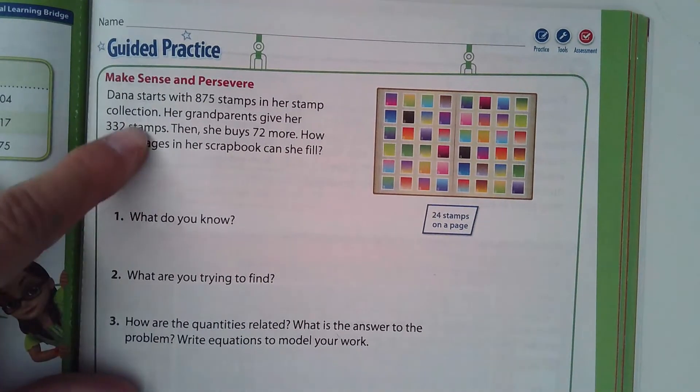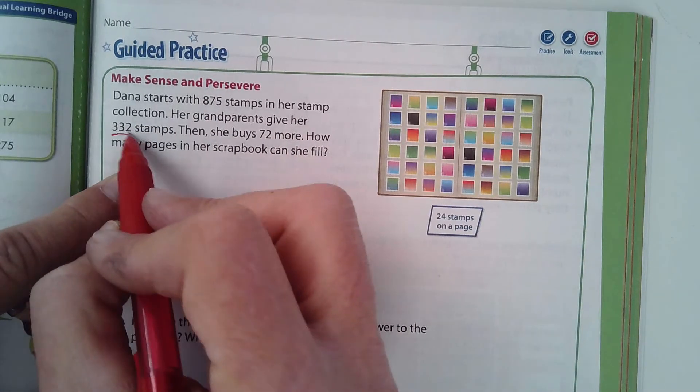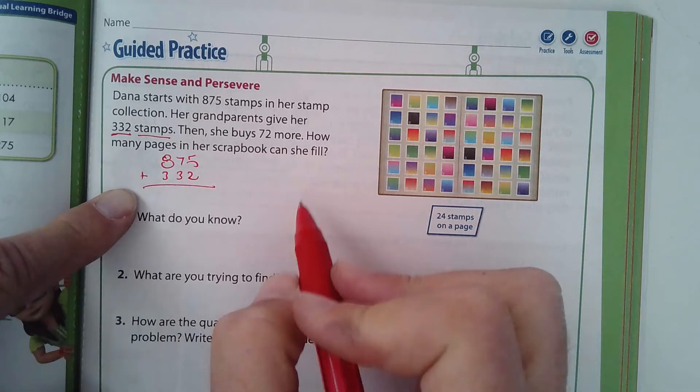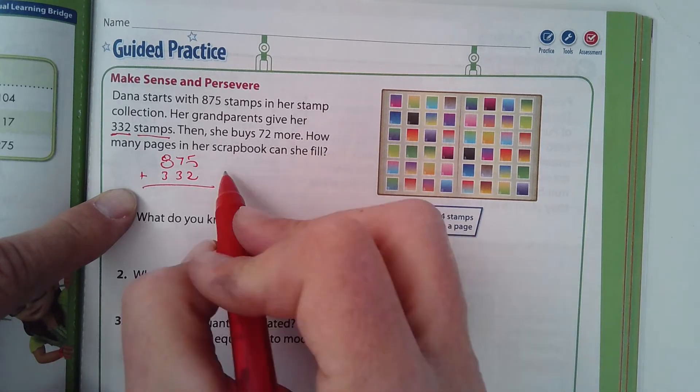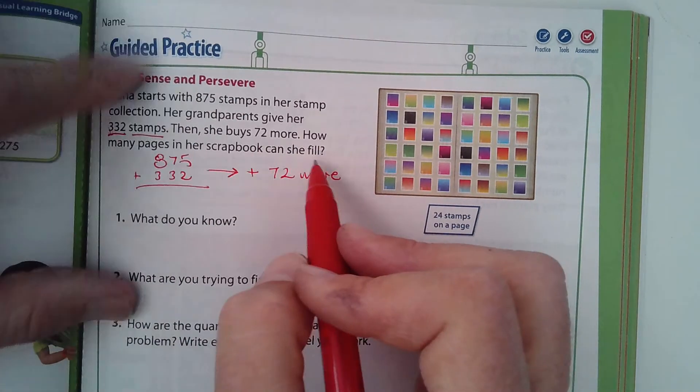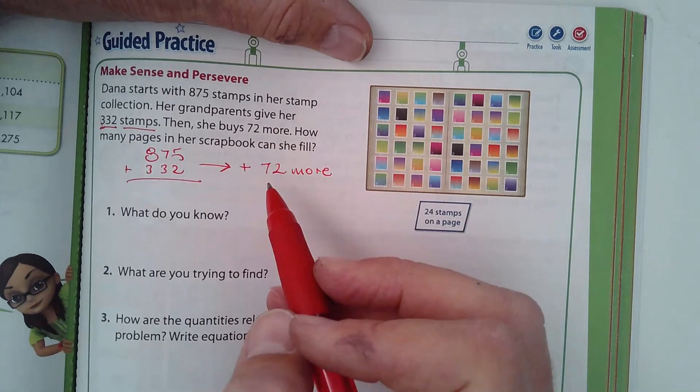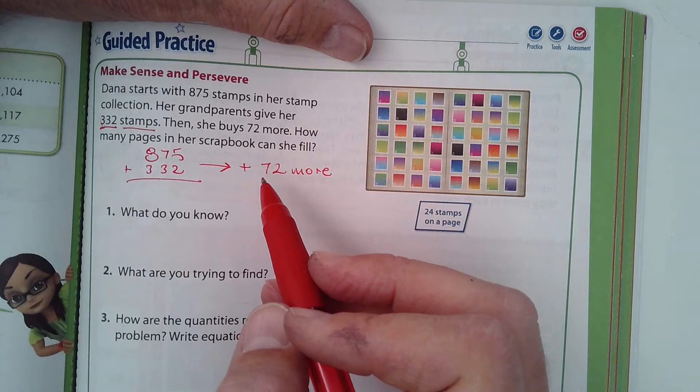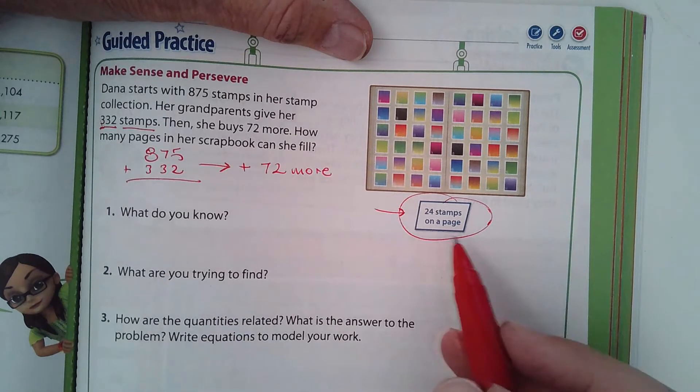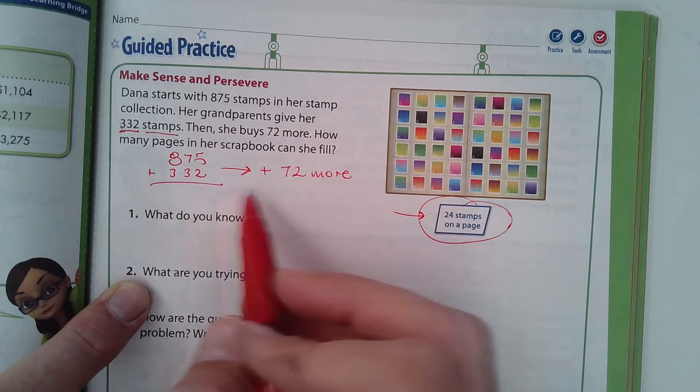Page 211. It says Dana started with 875 stamps in her stamp collection. Her grandparents give her 332 stamps. So, immediately I'm thinking 875 plus 332. And then she buys 72 more, plus 72 more. And it says, how many pages in her scrapbook can she fill? Well, gosh, they don't tell us in this part how many stamps she can fit on a page. But if you look over here, they do. 24 stamps on a page. So you're going to have to total those and then divide it by 24.